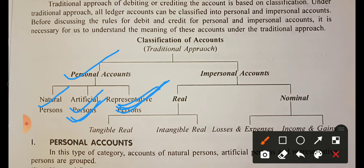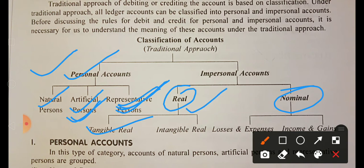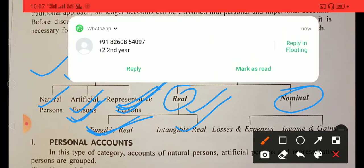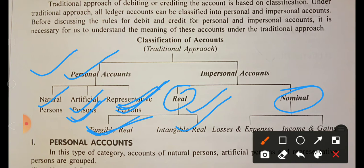The personal account means the person is related, whether natural or artificial. The impersonal account includes real accounts and nominal accounts. The real account includes the asset account — tangible assets such as building and machinery, and intangible assets such as goodwill, copyright, patent, trademark, reputation, good name. When assets come in, it is a tangible real account.